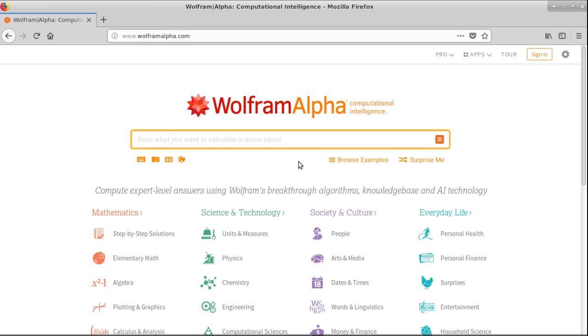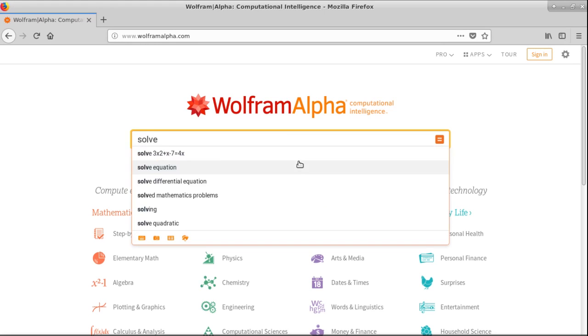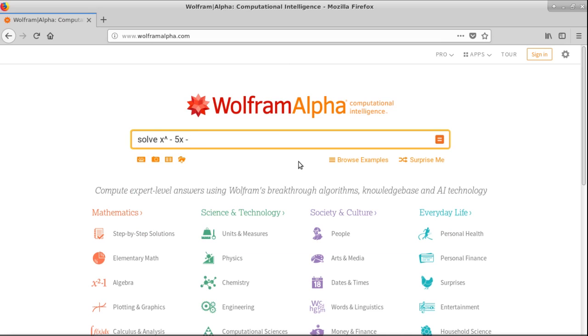So we can go to Wolfram Alpha, and this is the page right here. It's just wolframalpha.com. When you get here, this is what you'll see. And we can just type in in plain English. Solve that equation that we had, which was x cubed minus 5x minus 12.2 equals 0.